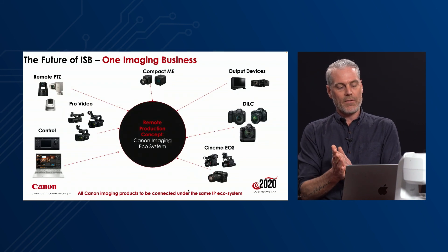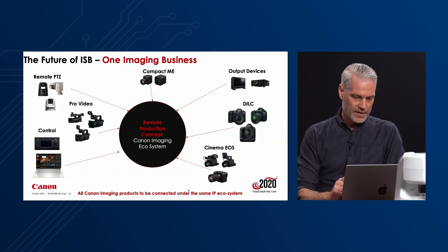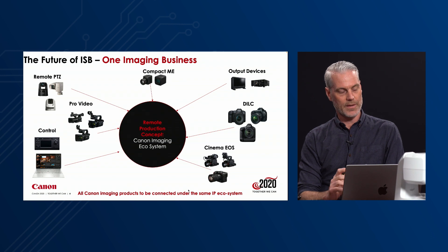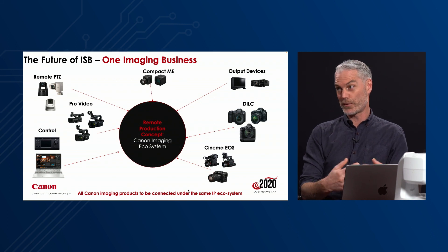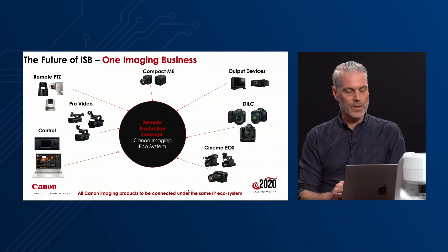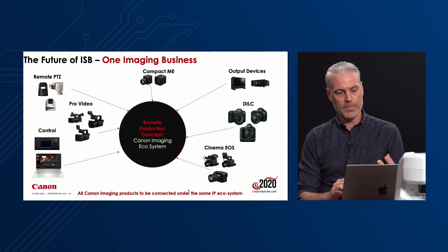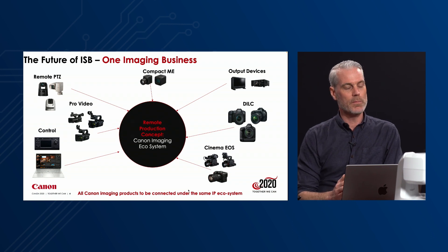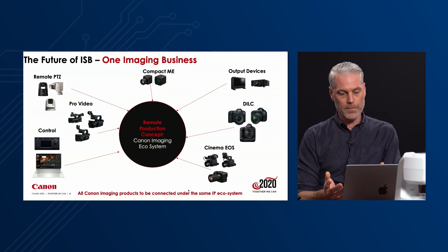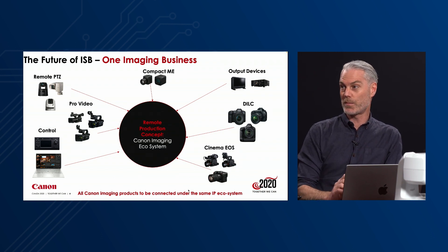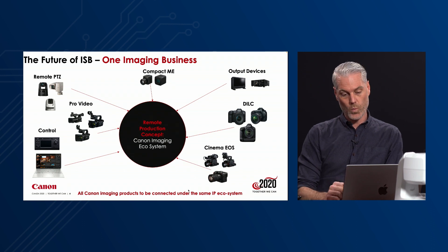At Canon we have a vision to integrate all our imaging products into one protocol called the XC protocol. Our cameras are compatible with that, and so is our hardware controller. In the future we'll see more and more imaging products compatible with this protocol to be integrated into the same ecosystem, where we can control multiple cameras from one controller.